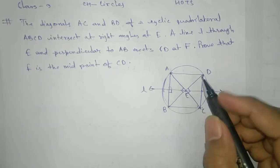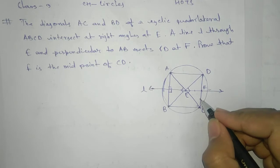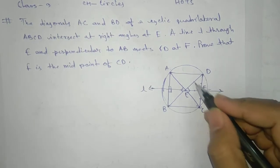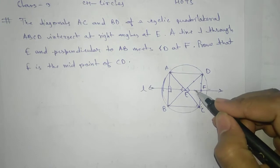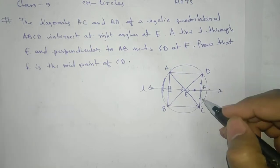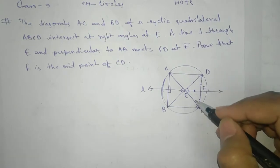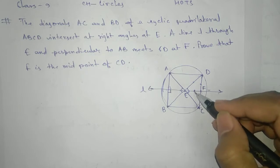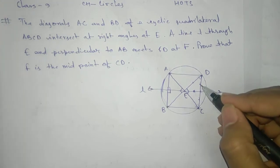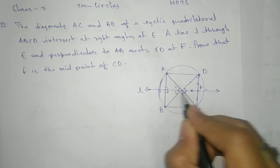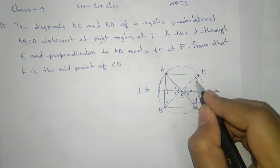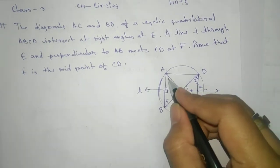Once we show DF equals CF, we can say that F is the midpoint. So our target is to prove these sides equal. This is possible only when we enter into the triangle and show that certain angles are equal — then we can say those sides are equal. We'll give names to the angles: one, two, three, four, five, six, and seven.